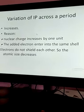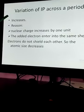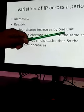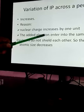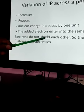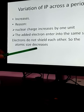And across the period, ionization potential increases. What is the reason? The reason is, the nuclear charge increases by one unit. When the added electron enters into the same shell, electrons do not shield each other. So, the atomic size decreases.